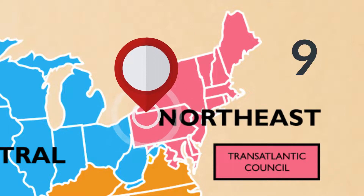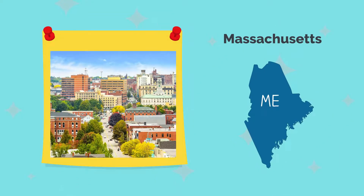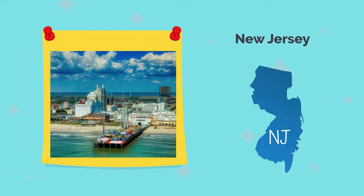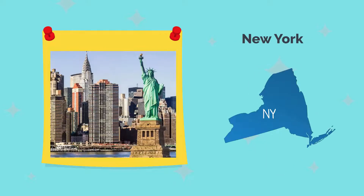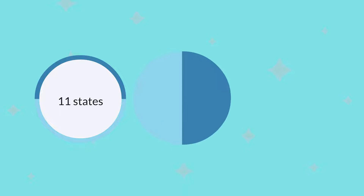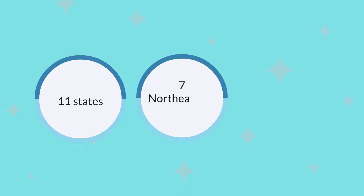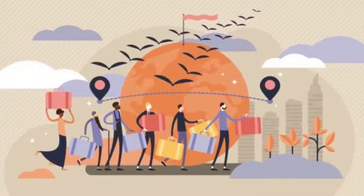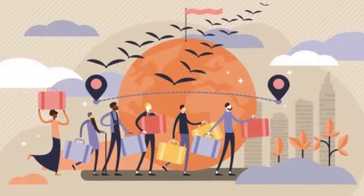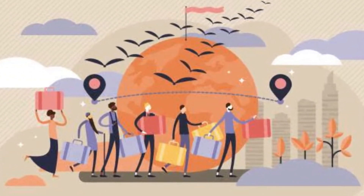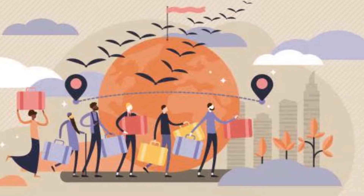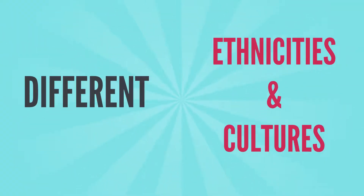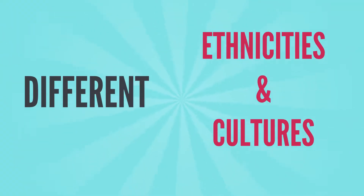Some notable Northeastern states include Massachusetts, New Jersey, New York, and Pennsylvania. Of these 11 states, seven Northeastern states were part of the original 13 colonies. Historically, immigrants first arriving in America landed in this region and stayed, so there is much diversity in terms of people from different ethnicities and cultures.